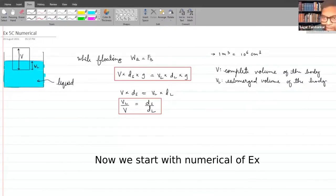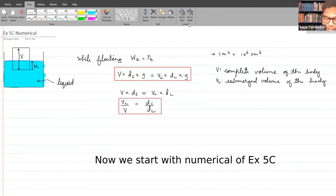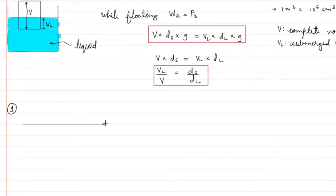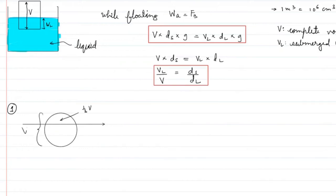The next numericals are based on the formula: when a body is floating, the upthrust equals the weight of the body. Upthrust equals volume of the submerged part times density of the liquid times gravity. The first question: a rubber ball floats on water with one-third volume outside water, so two-thirds of the volume is submerged.